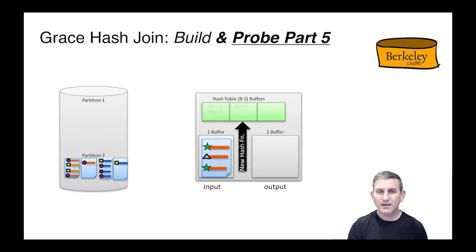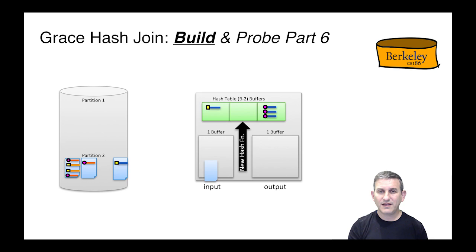When the output buffer fills, we're going to have to flush it to disk. When we're done with partition one, we're just going to do the same thing for partition two. We build a hash table again on R, one page at a time.